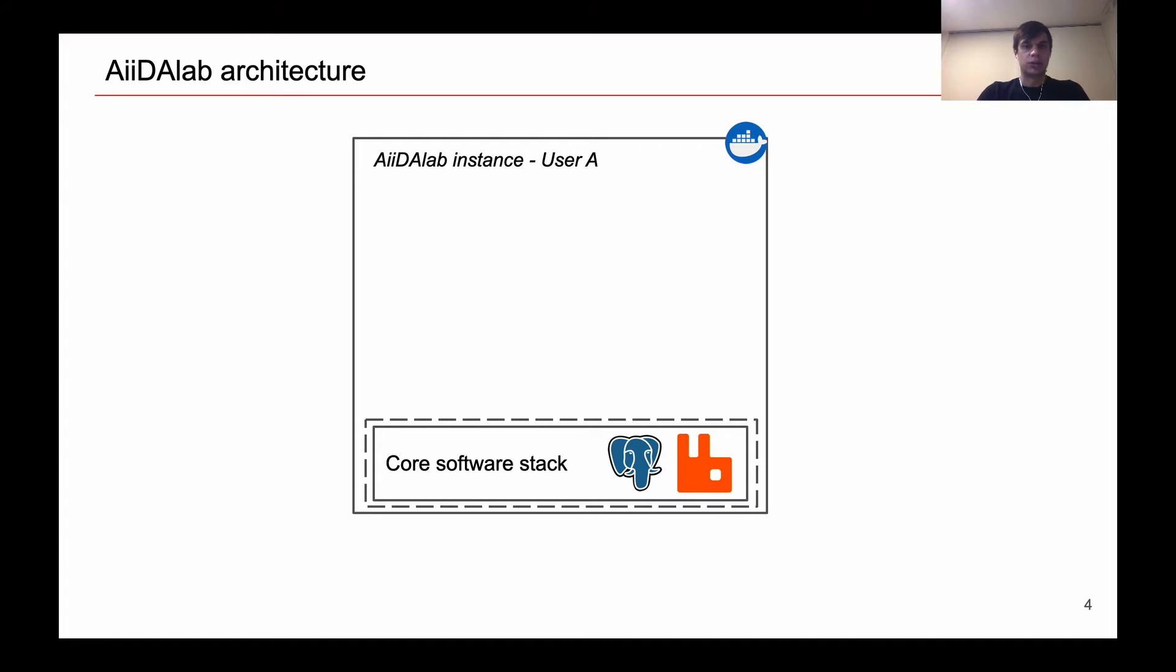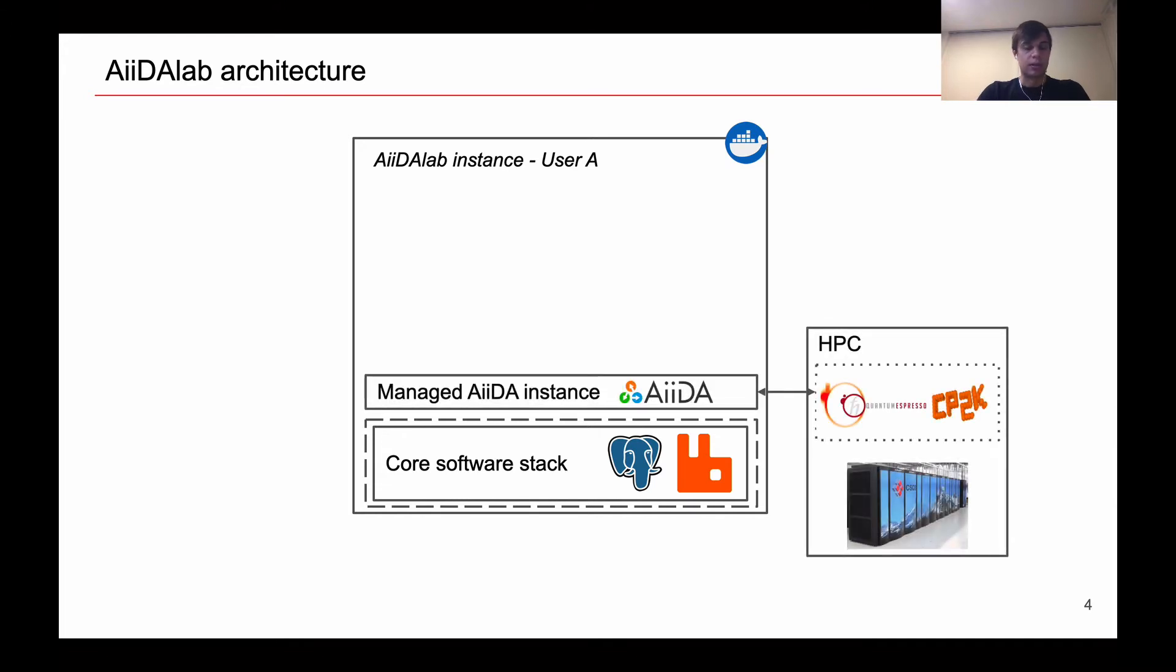In the following slide, I will show the AiiDAlab architecture. It all starts with Postgres database to store the data and RabbitMQ message broker. Those are the prerequisites for AiiDA to run. Then there is AiiDA that allows to run complex simulations and high-throughput simulations connecting simulations connected to a supercomputer and executing codes installed on these supercomputers.